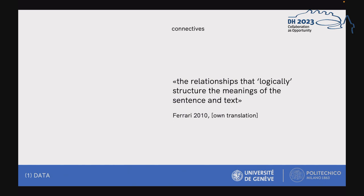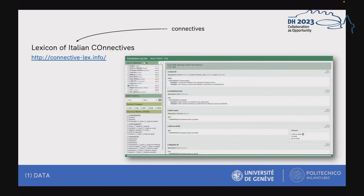Connectives define the relationships that logically structure the meanings of sentences and text. These linguistic particles are the joints of argumentation — they articulate, unraveling the discourse, escaping the physical dimension of the printed line to dynamize in the text and hierarchicalize its various parts. For our study, we relied on the classification proposed within LICO, the Lexicon of Italian Connectives, edited by Anna Feltracco, Elisabetta Gesteck, Bernardo Magnini and Manfred Stede. LICO is part of the Connective Lexicon project, a website developed by Felix Dombeck from 2017 at the Department of Linguistics at the University of Potsdam.